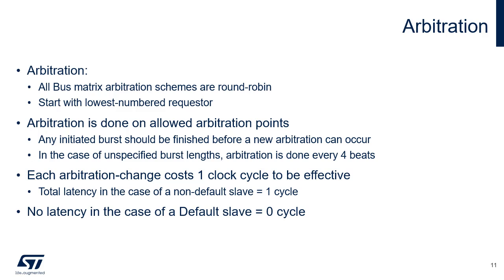The bus matrix manages access arbitration between masters using a round-robin algorithm which starts with the lowest numbered requester. Arbitration is done on allowed arbitration points to ensure that bursts cannot be preempted. The bus matrix features a fast bus multiplexer used to connect each master to a given slave without latency; for the same master, other slaves undergo a latency of at least one cycle at each new access.